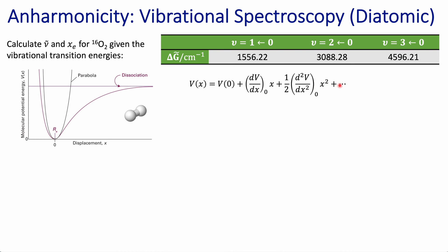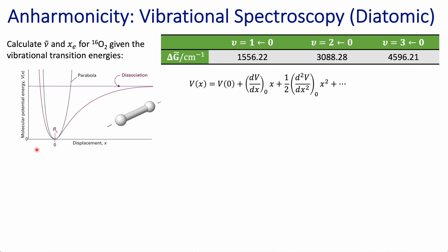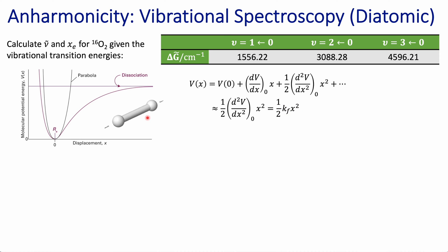Now, this potential energy of my molecule can be represented by this Taylor series expansion. The first term can be arbitrarily set to zero, as we're doing in this diagram. Then the first derivative evaluated at displacement zero, from my graph, is going to be a minimum, so the derivative at a minimum is equal to zero. Those two terms end up being zero. The first term that survives is that the potential energy is proportional to the displacement squared. That proportionality constant is the force constant for that spring — in this case, the stiffness of the bond — and the fact that it's quadratic. The potential is quadratic with the displacement; that's what we're representing here with this parabola.